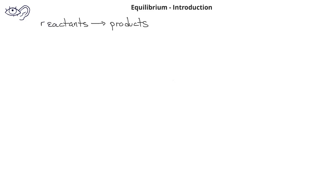When we've learned about chemistry in the past, we've talked about chemical equations in which we have reactants on the left and products on the right. We read the equation in such a way that the reactants proceed to the products from left to right. However, there are many interesting chemical reactions that can take place in either direction.